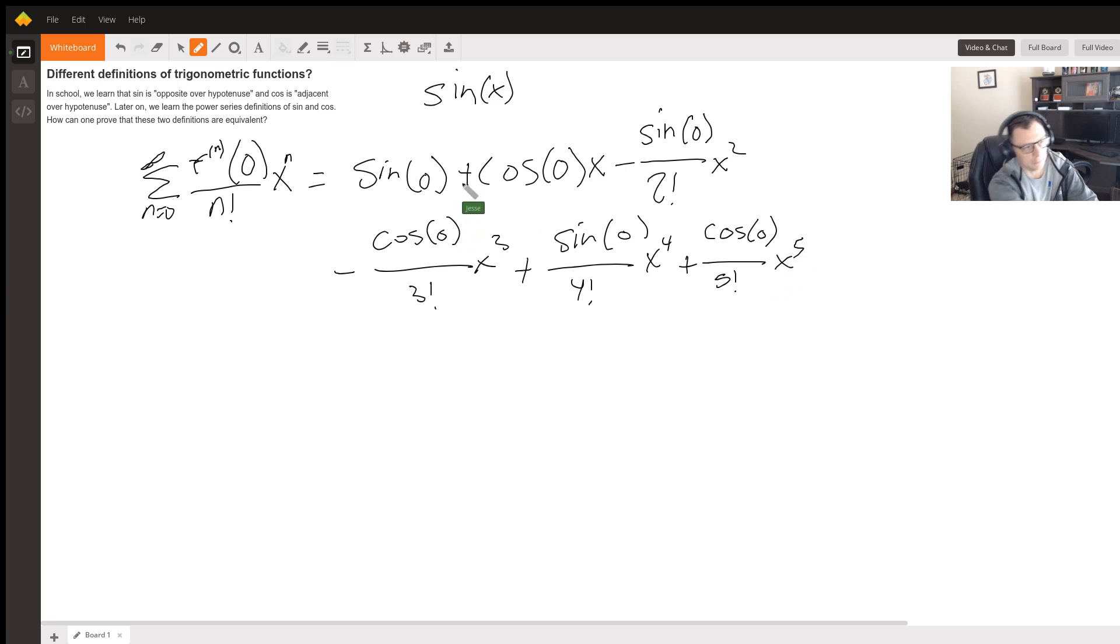So now if you were to actually evaluate these, sine of zero is zero. So this gets cancelled out. Sine of zero is zero, this gets cancelled out, this gets cancelled out, and so on. And all you're left with, cosine of zero is one.